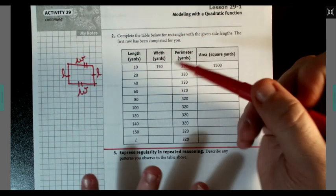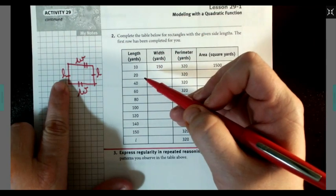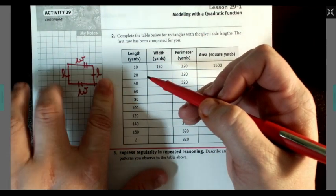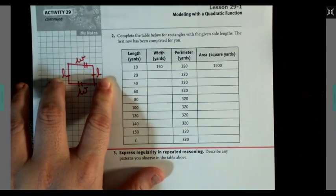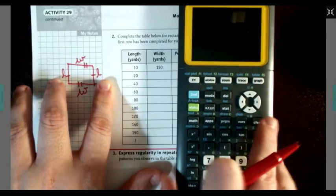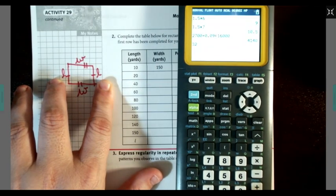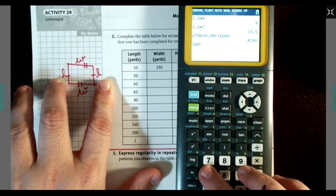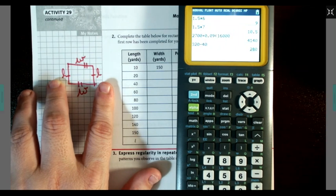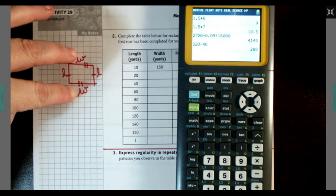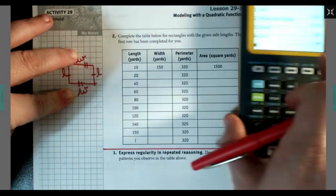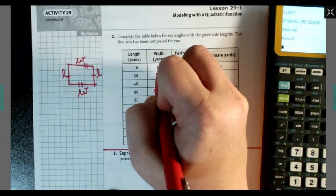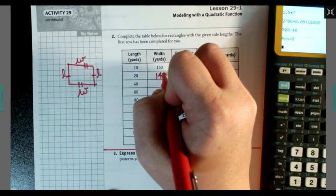So we know that the length plus the width plus the length plus the width has to be 320 feet. So if this is 20, that makes this 20, right? So that's 40. Well, all together, I got 320. So let's do 320 minus 40. So these together equal 280. So to find one length, I would divide by 2 and get 140.